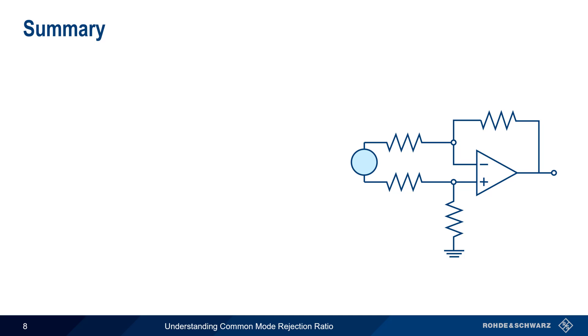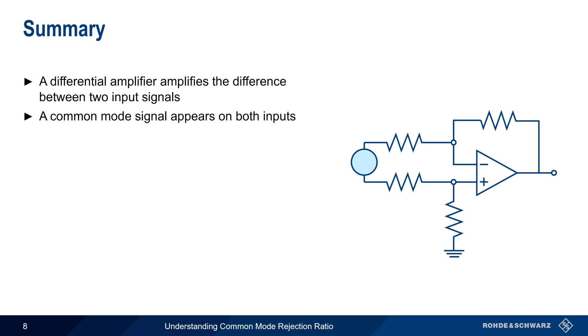Let's end with a brief summary. A differential amplifier is a device that amplifies the difference between two input signals. Common mode signals are signals that appear identically on both inputs. These are most often noise, or some type of offset or bias.